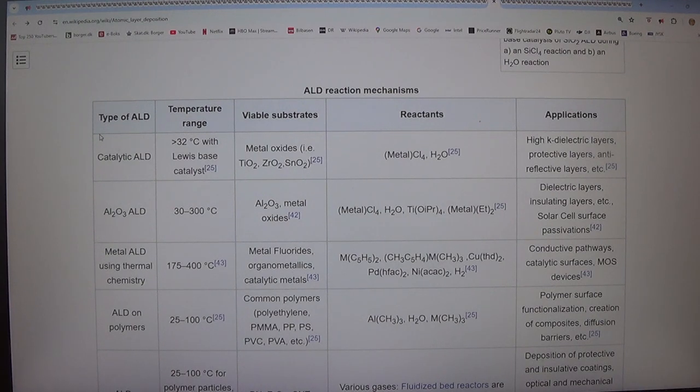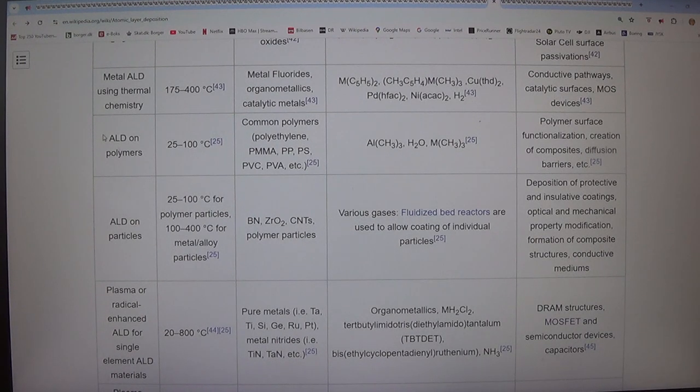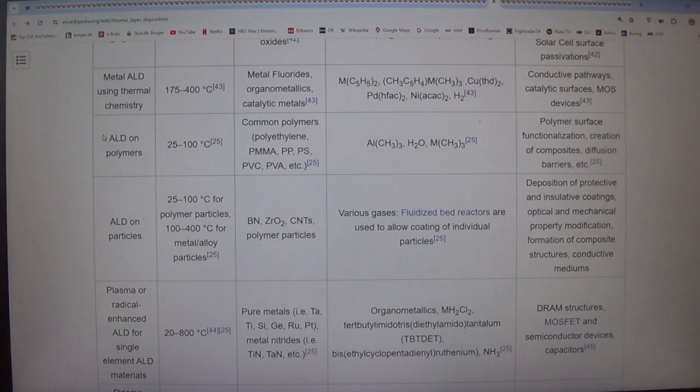Metal ALD reactants include various metal complexes such as M(C5H5)2, (CH3C5H4)M(CH3), 3Cu(THD)2, Pd(THC)2, Ni(ACARC)2, and H2 for conductive pathways, catalytic surfaces, and MOSFET devices.